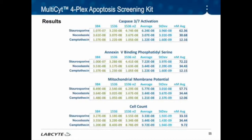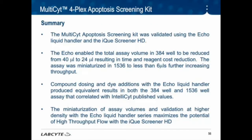In summary, the MultiSite apoptosis screening kit was validated using the Echo liquid handler and the IQ Screener HD. The Echo enabled total assay volume in 384-well to be reduced from 40 microliters to 24 microliters, resulting in time and reagent cost reduction. The assay was miniaturized in 1536-well to less than 6 microliters, further increasing throughput. Compound dosing and dye additions with the Echo liquid handler produced equivalent results in both 384-well and 1536-well assays, all correlating with IntelliSite published values. The miniaturization of assay volumes and validation at higher density with the Echo liquid handler series maximizes the potential of high-throughput flow with the IQ Screener HD.